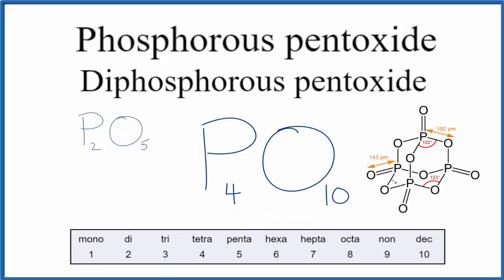So this is a case where there's a bit of history behind the formula, and we call it phosphorus pentoxide or diphosphorus pentoxide, but what we mean is P4O10. So if you're asked to write the formula for phosphorus pentoxide or diphosphorus pentoxide, really what we're talking about is P4O10.